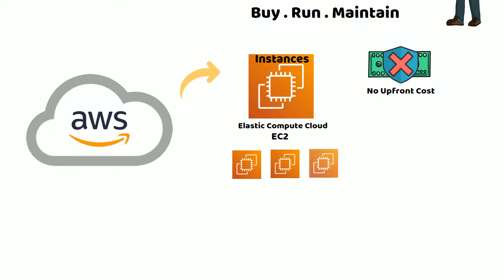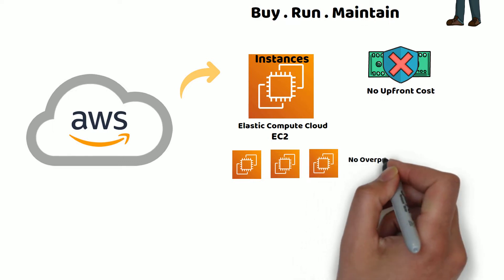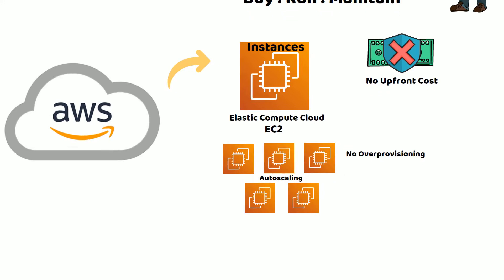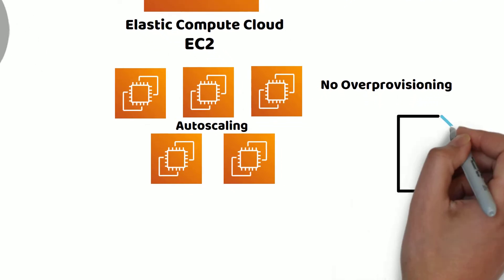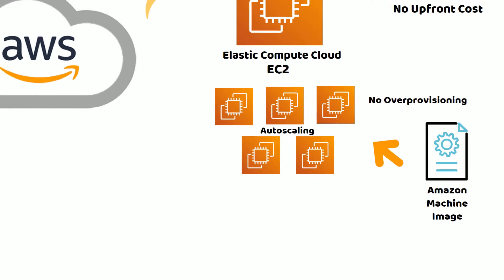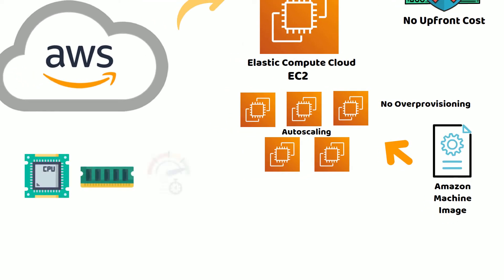You can launch as many or as few instances as you need, and there is no need to over-provision — you can start with what you need and use auto scaling to spin up more instances as demand increases. To make it easier, pre-configured templates known as Amazon Machine Images, or AMIs, package the software required to launch these instances. Various combinations of CPU, memory, and networking capacity are available in the form of instance types.